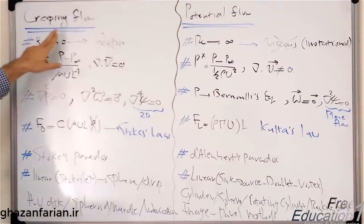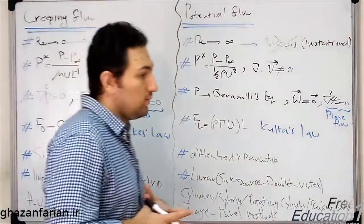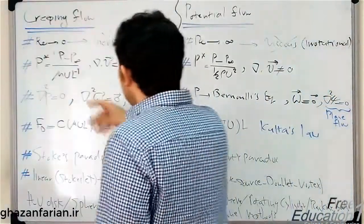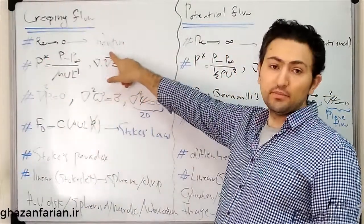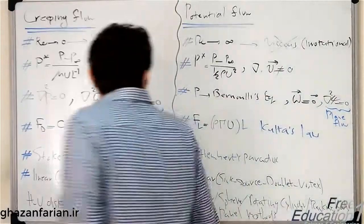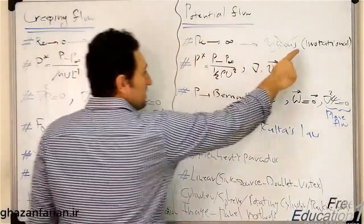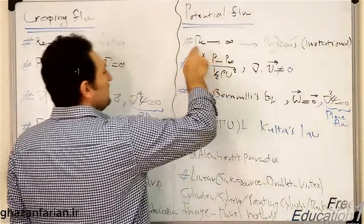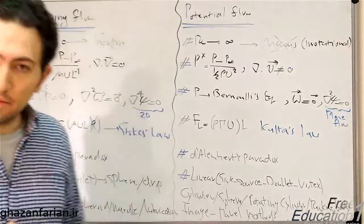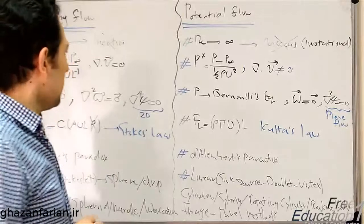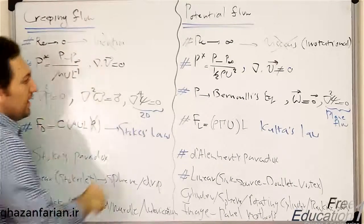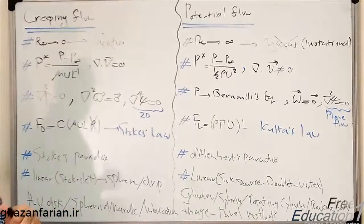The first comparison point is the Reynolds number. In creeping flow, inertia is negligible compared to viscous forces, so the Reynolds number goes to zero and the inertial, nonlinear, or advection terms vanish. In potential flow, which is an irrotational flow, the Reynolds number goes to infinity and, in contrast, the viscous forces are small compared to inertia — so viscosity vanishes from the equations.